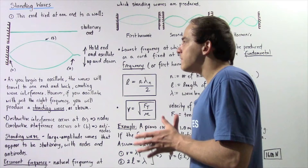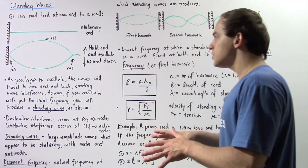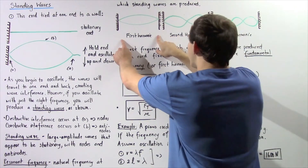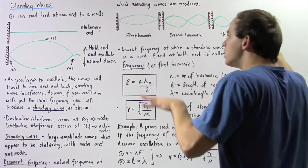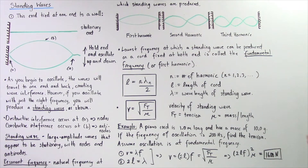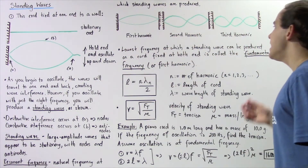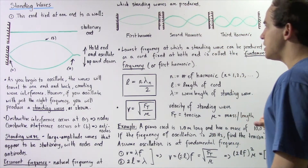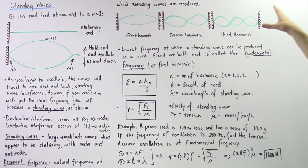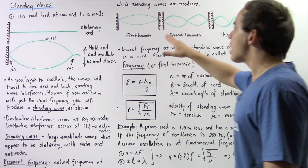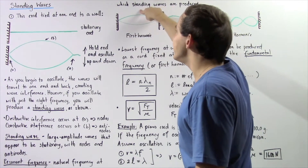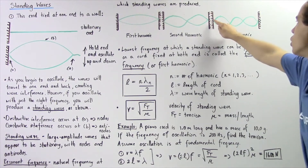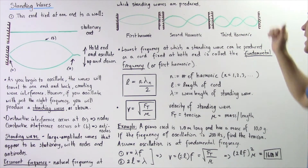Technically, we could have as many standing waves as we want. The first three standing waves for a cord fixed at both ends are shown in the diagram. The lowest frequency at which a standing wave can be produced is called the fundamental frequency, or the first harmonic. The next is the second harmonic, then the third harmonic, and so on. The first harmonic has two nodes and one antinode; the second harmonic has three nodes and two antinodes; and the third harmonic has four nodes and three antinodes.